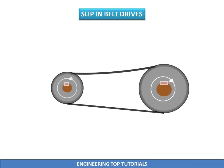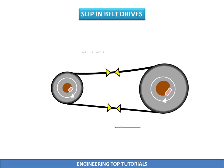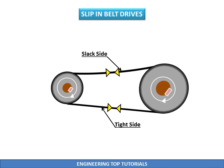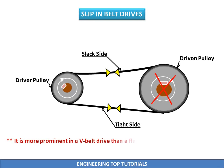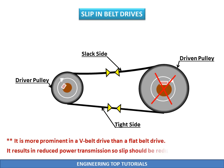Slip in belt drives: Slip is due to incorrect tensions in the belt. In this phenomenon, the driver pulley moves but the driven pulley does not move. It is more prominent in a V belt drive than a flat belt drive. Slip results in reduced power transmission, and so slip should be reduced to the minimum.